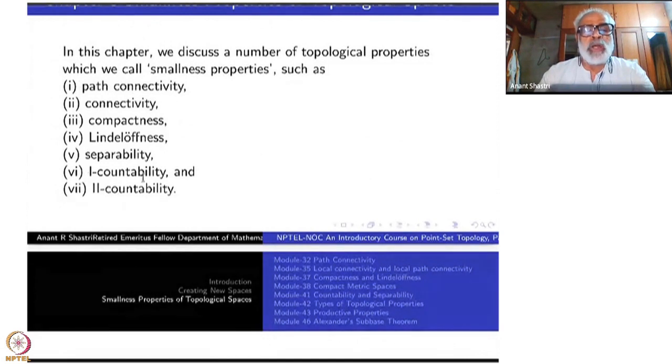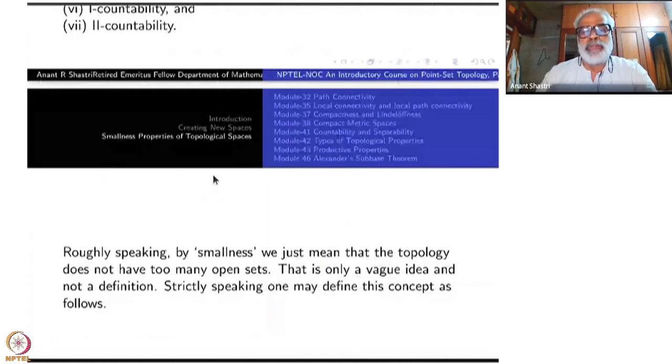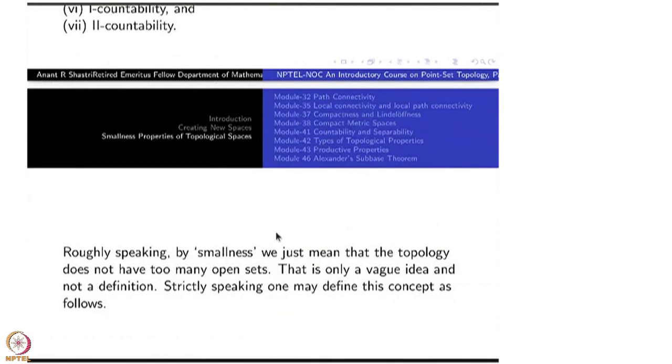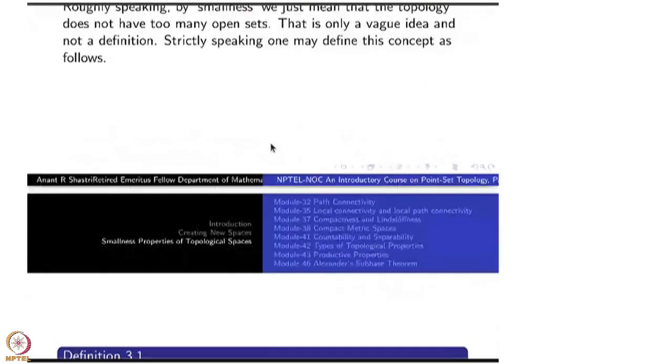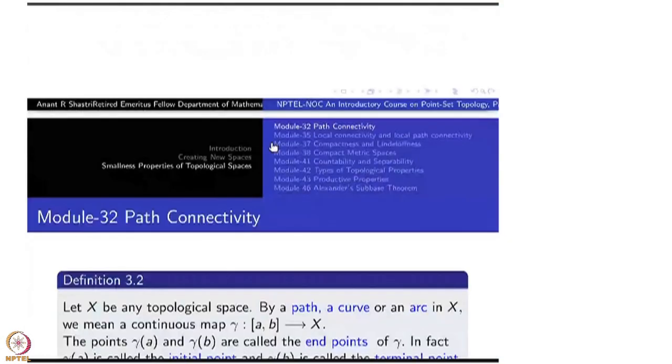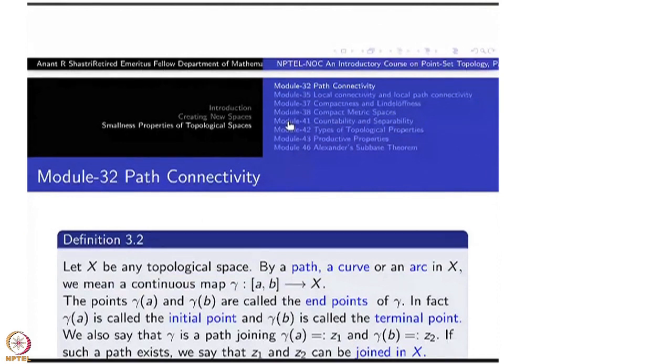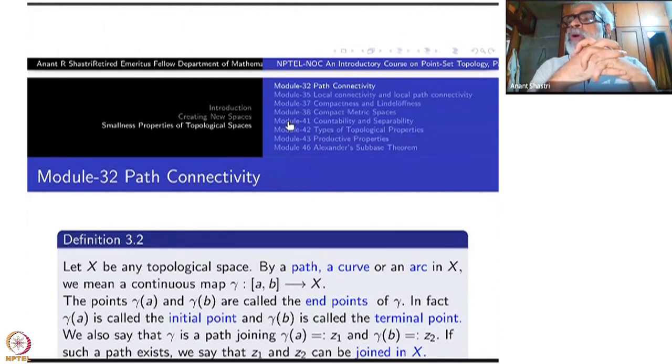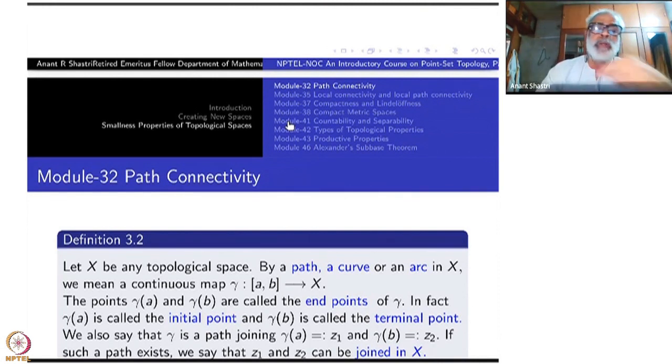I caution you the last two are not of that nature. Nevertheless, they fit into the vague definition. That is why I am not very fussy about this definition. The first module here is module 32, path connectivity, which is directly from elementary geometric concepts.